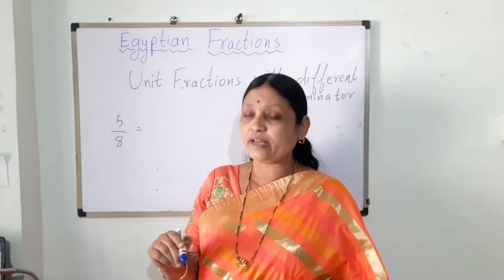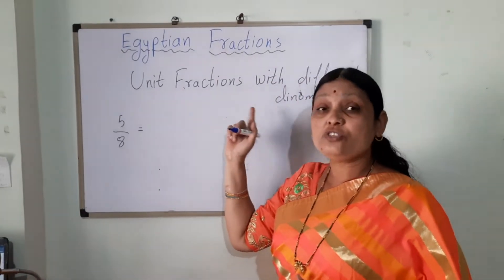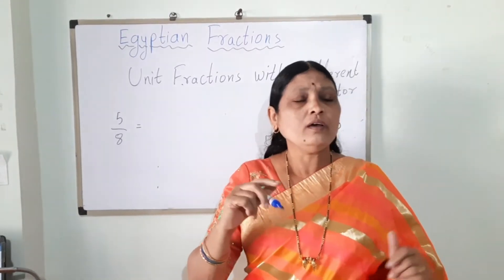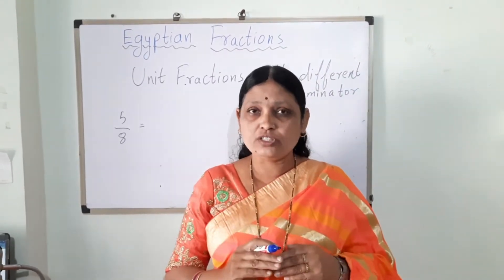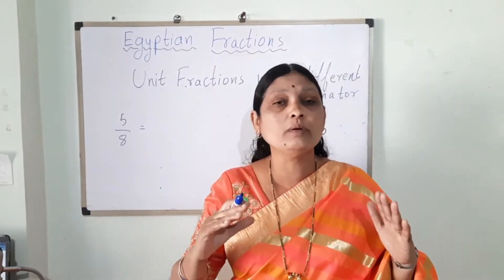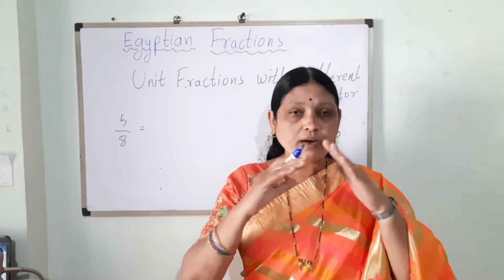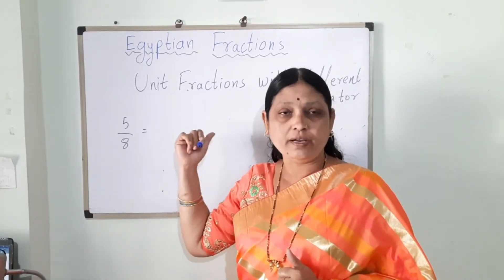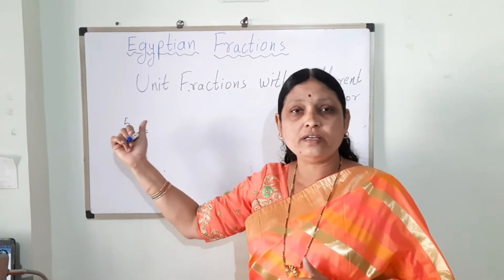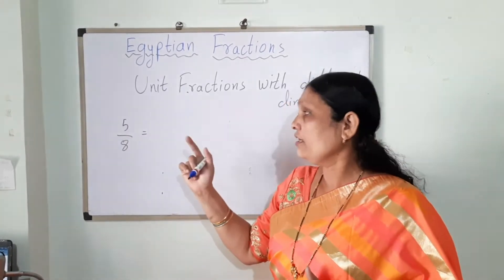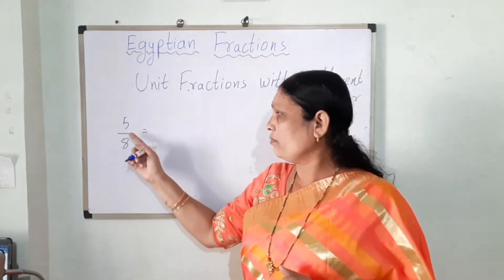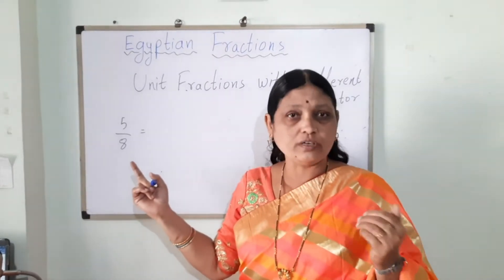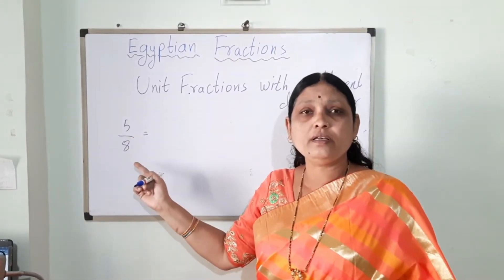Egyptian fractions are fractions with different denominators. They were discovered because many Egyptian structures required massive labor work, so dividing this work among many people was easy using these fractions. Any rational number in the form of p by q, where p and q are integers, can be written in the form of Egyptian fractions.